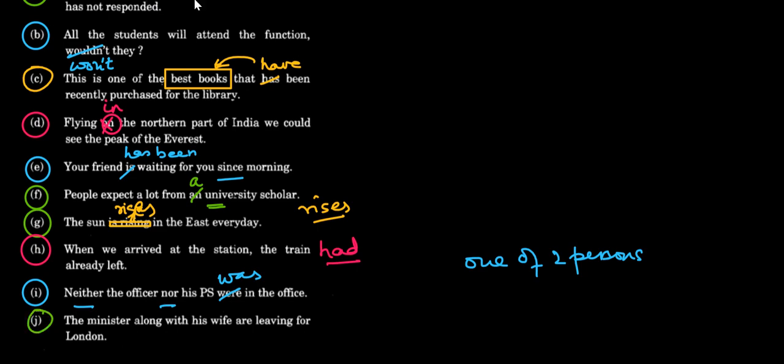Last one: The minister along with his wife are leaving for London. This one is talking about the minister. Wife is tagged with him. So are is not correct, it would be is. If it were told that the minister and his wife, then it would have been are. Instead of along, if it was and, the minister and his wife, then it becomes plural, then it would be are.